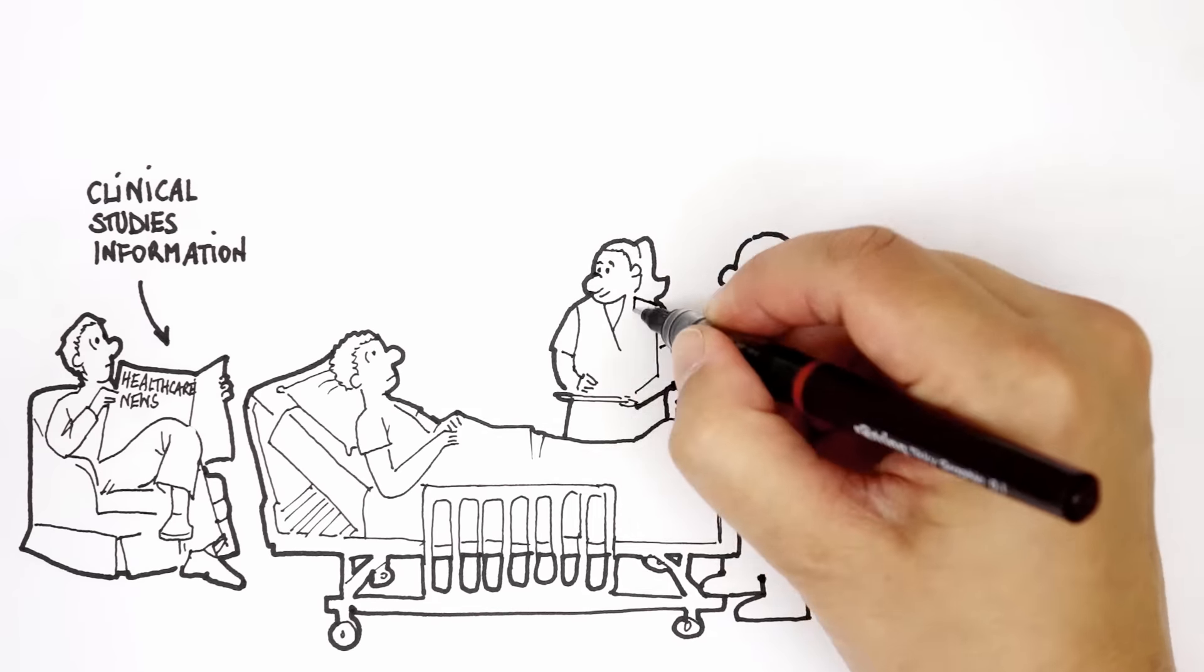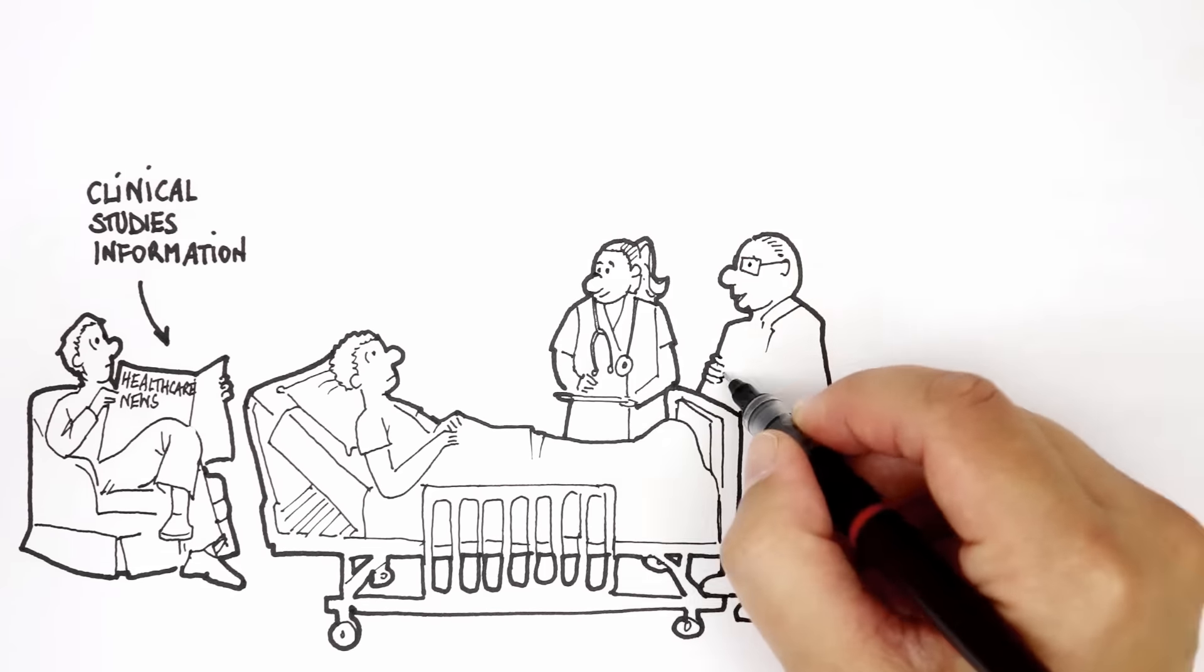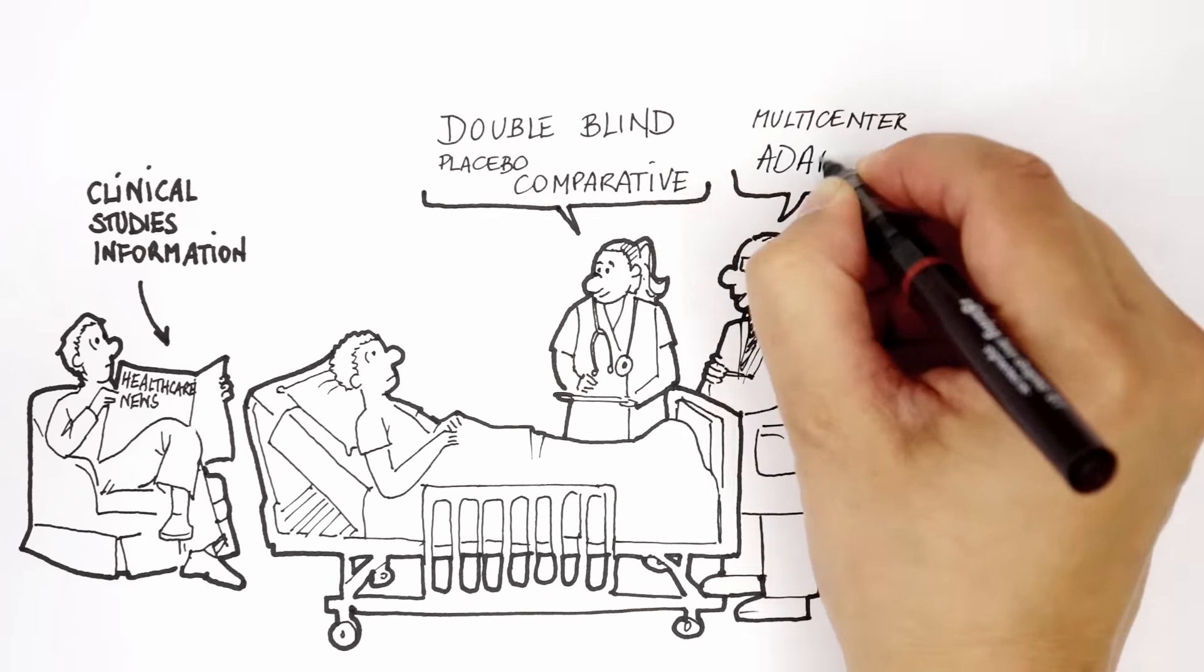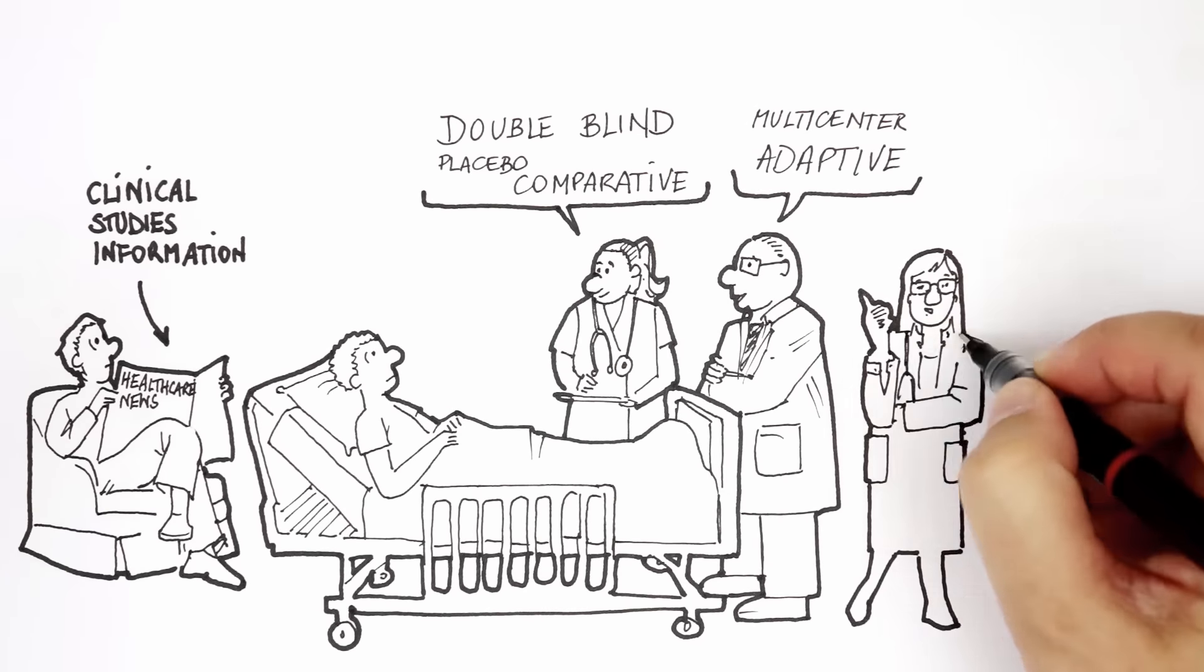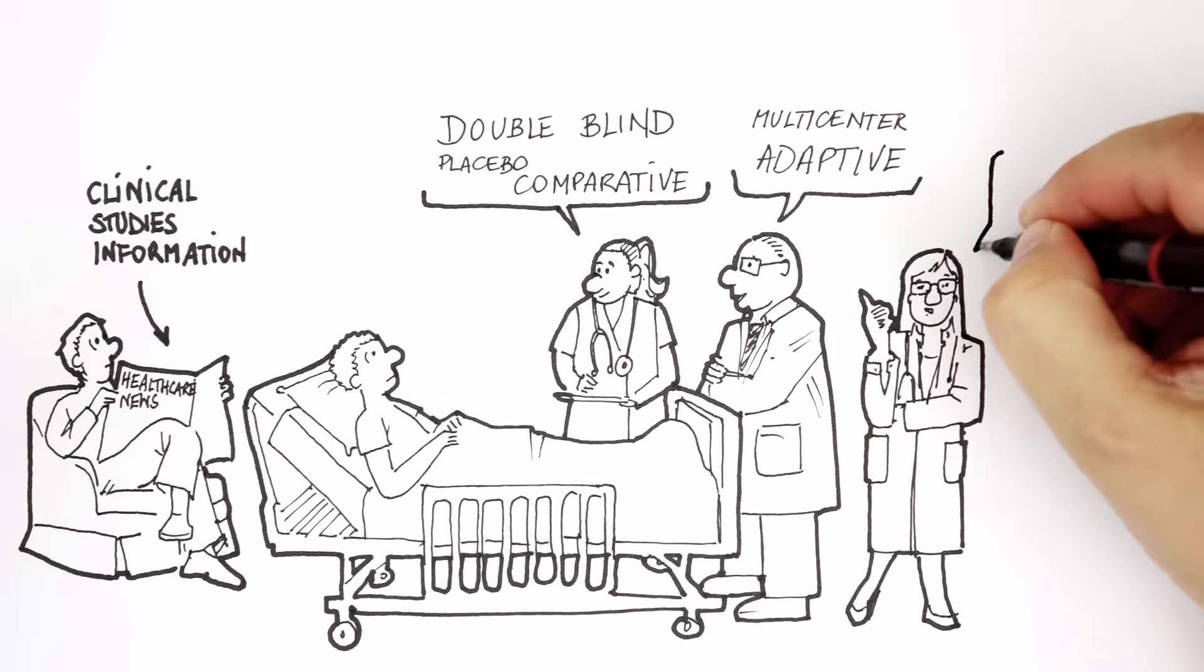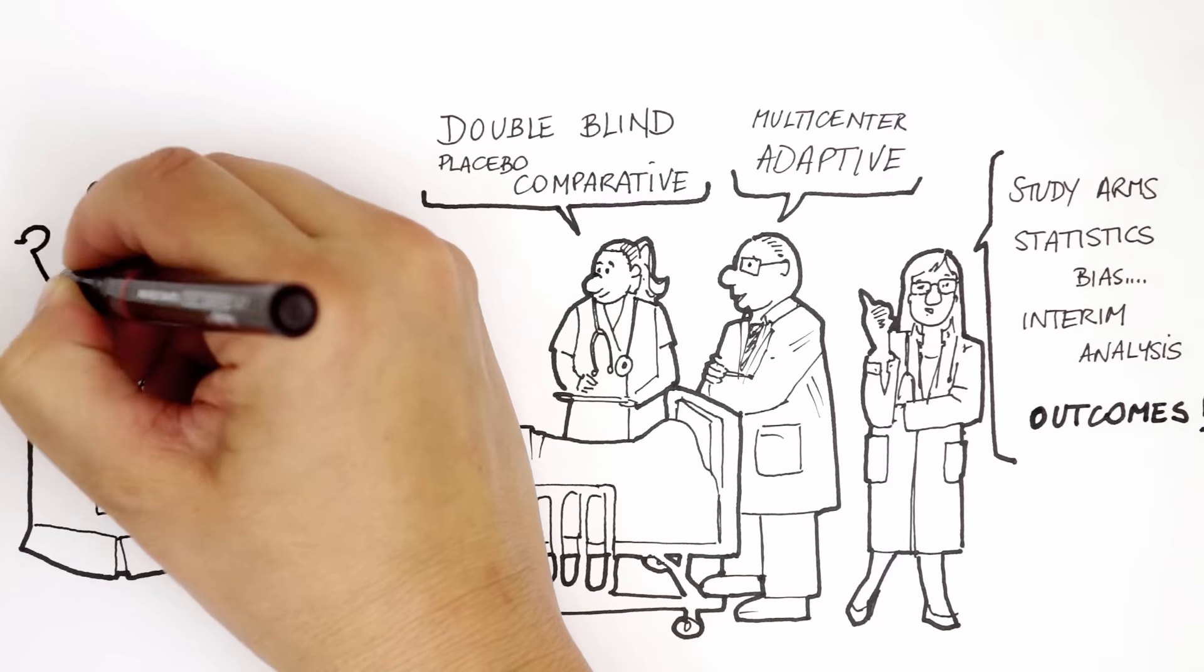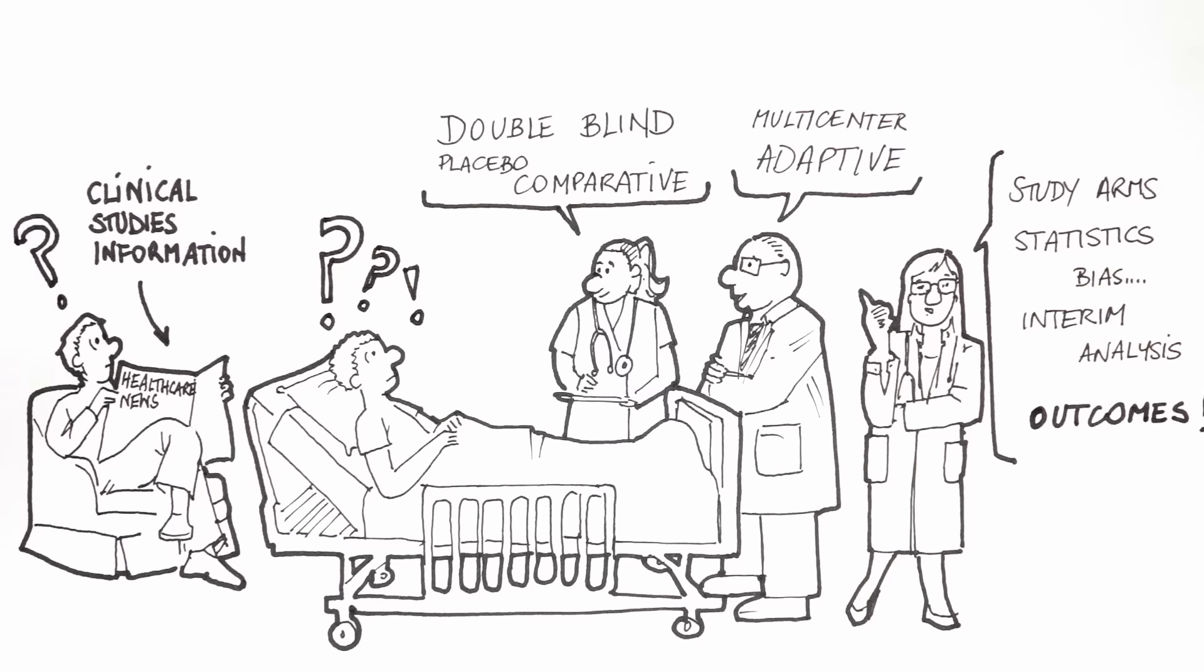When experts talk about clinical studies you'll hear expressions like double-blind, comparative, multicenter or adaptive and maybe also study arms, statistical significance, bias, interim analysis and above all outcomes. Complicated stuff. What's it all about?